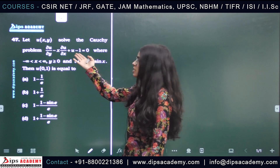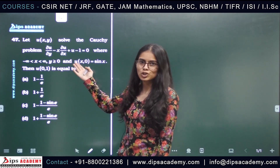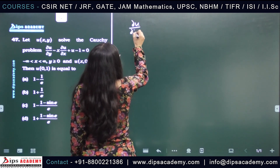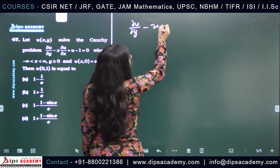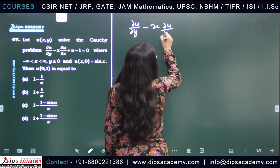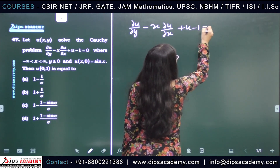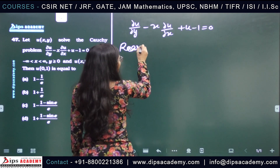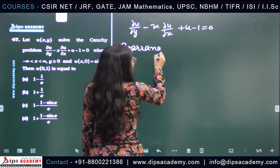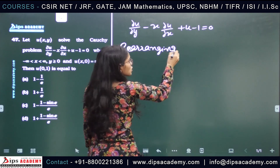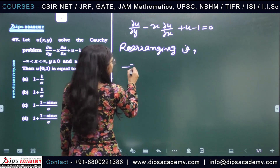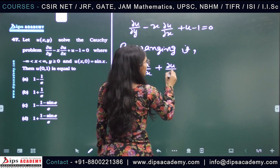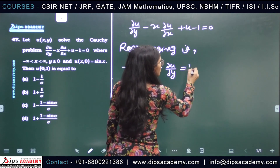As we know, the given partial differential equation is a Cauchy partial differential equation. The equation is ∂u/∂y minus x·∂u/∂x plus u minus 1 equals 0. Rearranging it in the standard form of the Cauchy PDE, we get: minus x·∂u/∂x plus ∂u/∂y equals 1 minus u.